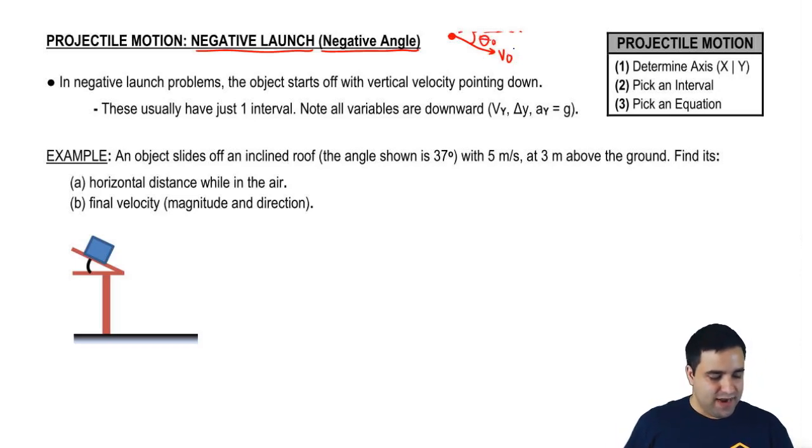The vector is at an angle, so I have to decompose it into v initial x and v initial y. V initial x will be positive, v initial y will be negative because it's going down. And remember, this is your vx. It's always going to be the same. That vx will never change.